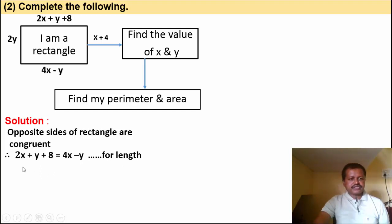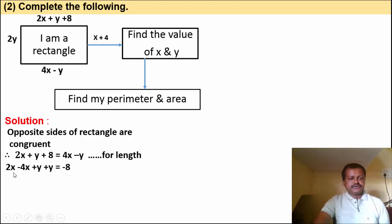Simplifying: take 4x to the left and minus y to the right. We get 2x minus 4x plus y plus y plus 8 equals 0, which becomes minus 2x plus 2y equals minus 8.